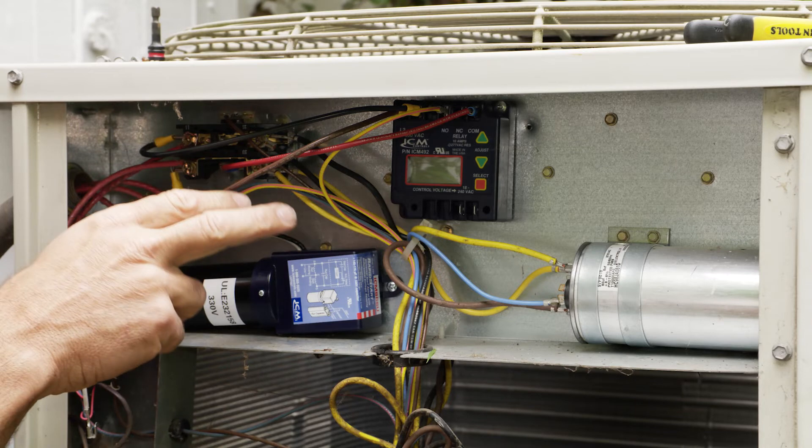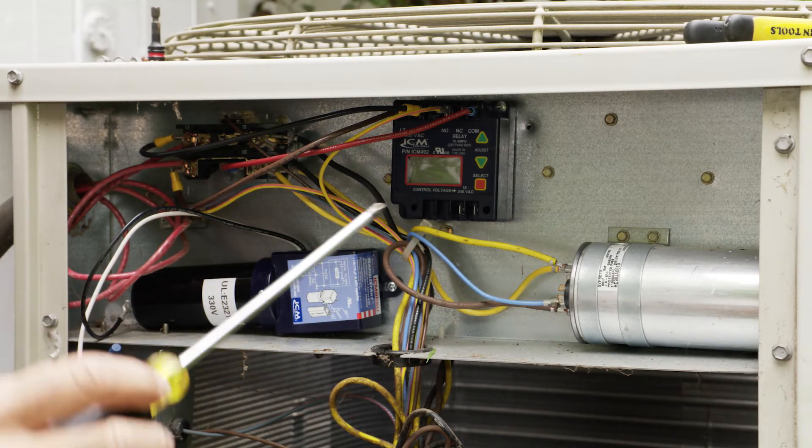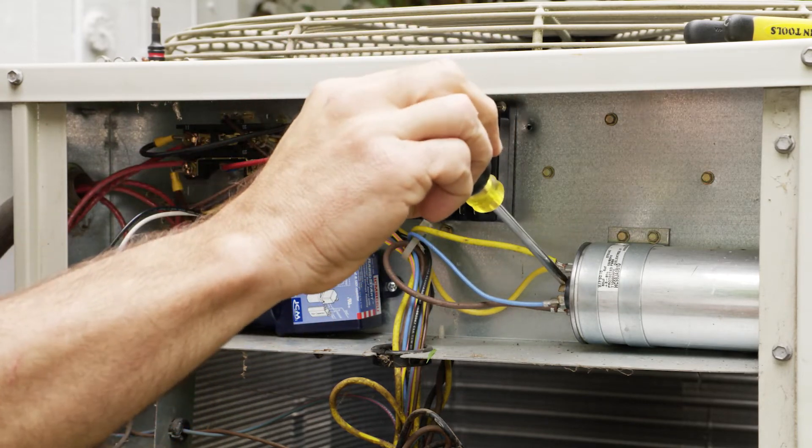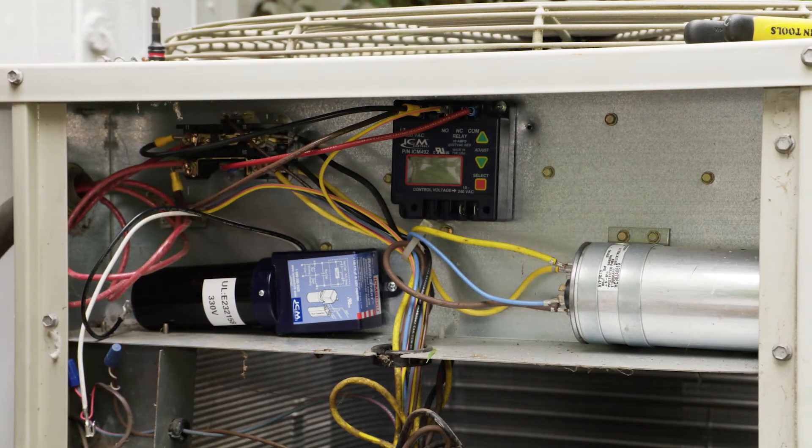Now that we have our ICM 866U mounted, we're going to discharge the run capacitor. Make sure your power is off. You're just going to go across all the terminals and that will discharge your start capacitors so you don't get that shock.